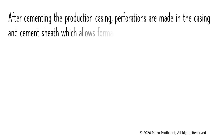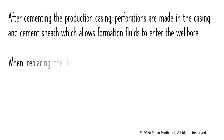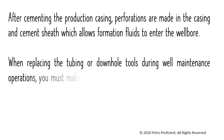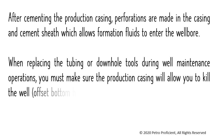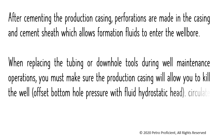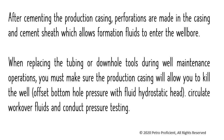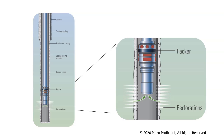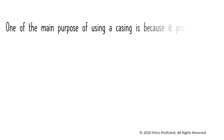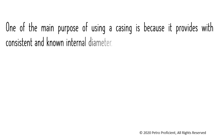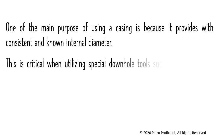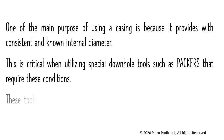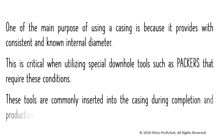After cementing the production casing, perforations are made in the casing and cement sheath, which allows formation fluids to enter the wellbore. When replacing the tubing or downhole tools during well maintenance operations, the production casing must allow you to kill the well, circulate workover fluids, and carry out pressure testing. One of the main purposes of casing is that it provides a consistent and known internal diameter, which is critical when utilizing special downhole tools such as packers. These tools are commonly inserted into the casing during completion and production operations in order to isolate the wellbore at desired points.